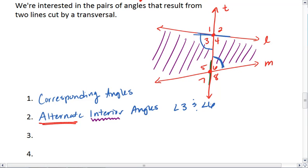What would be another example of alternate interior angles? Hopefully, you picked angles four and angle five. Those are our pairs of alternate interior angles.